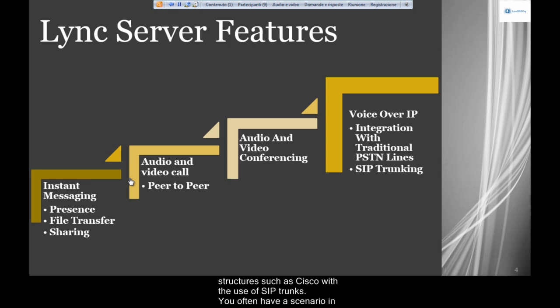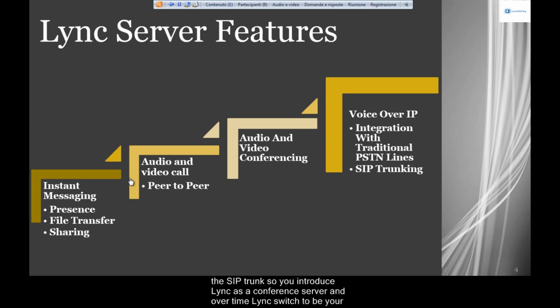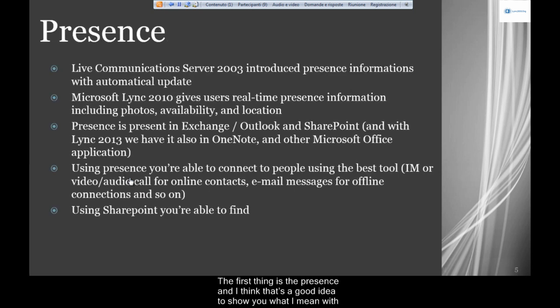You often have a scenario where you have Link and a Cisco VoIP structure, and the two work together using a SIP trunk. You introduce Link as a conference server, and over time Link switches to becoming your VoIP server. The first key feature is presence — let me show you what I mean using the Link client.